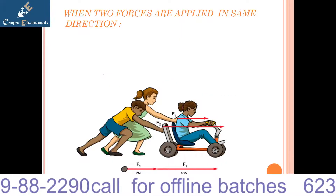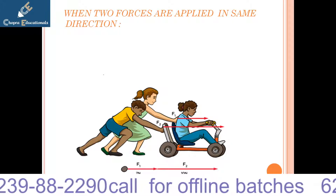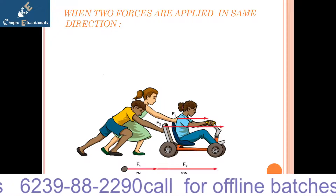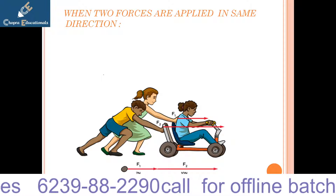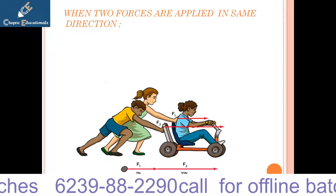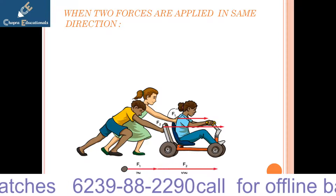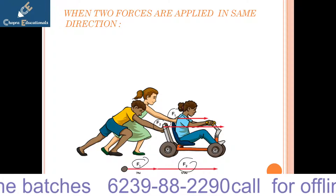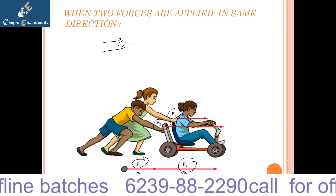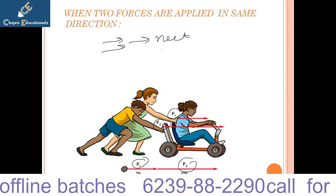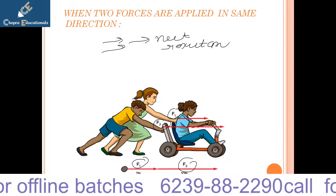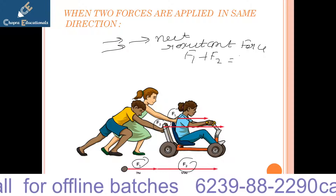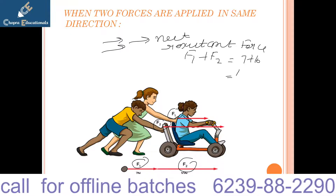When two forces are applied in the same direction: for example, one child is standing on a scooter and two children are pushing from the back — one force is F1 and the other is F2. When both forces act in the same direction, the net resultant force is F1 plus F2. So, 7 plus 10 equals 17 Newtons — that is the net resultant force.